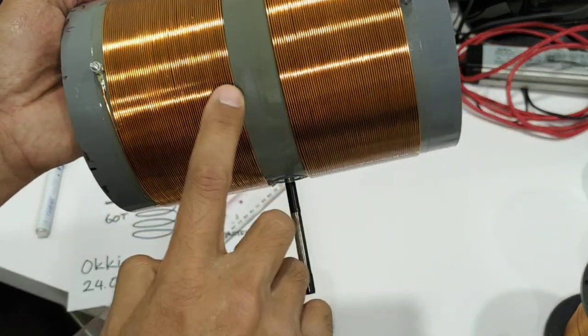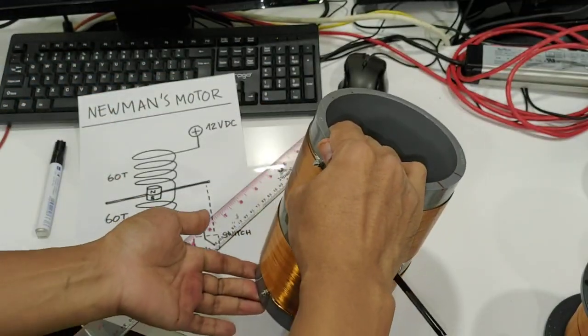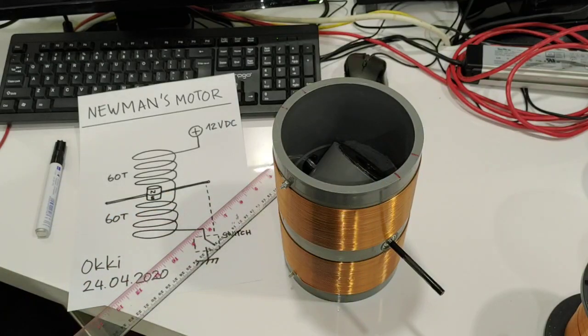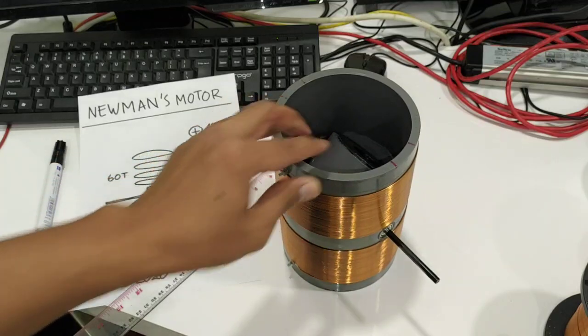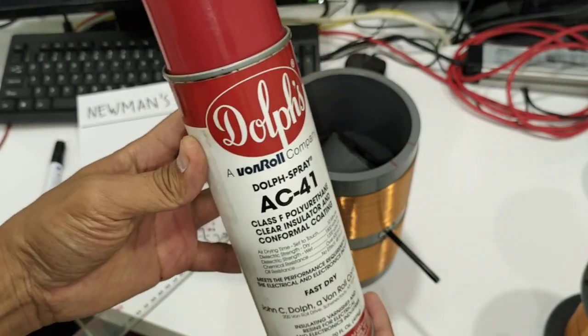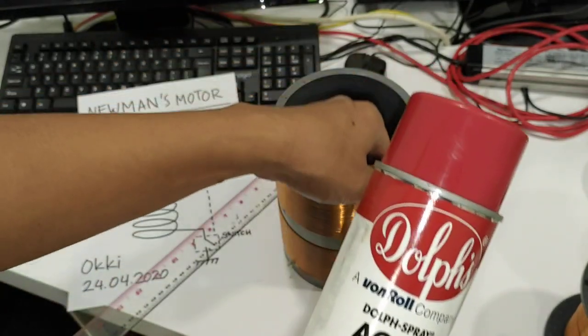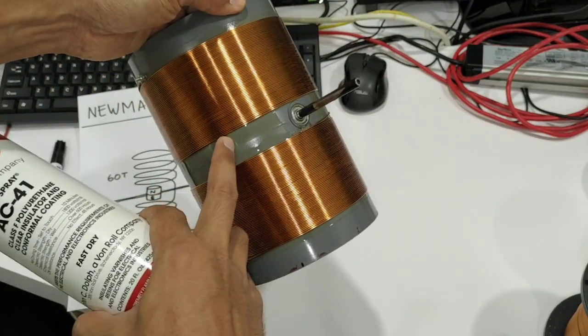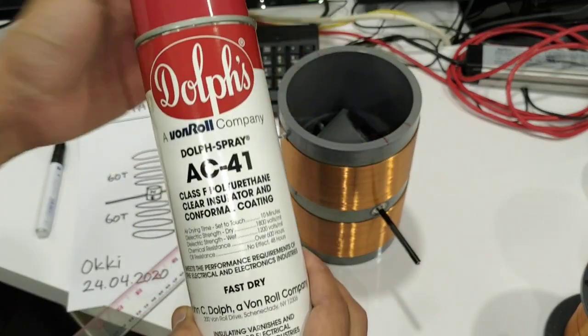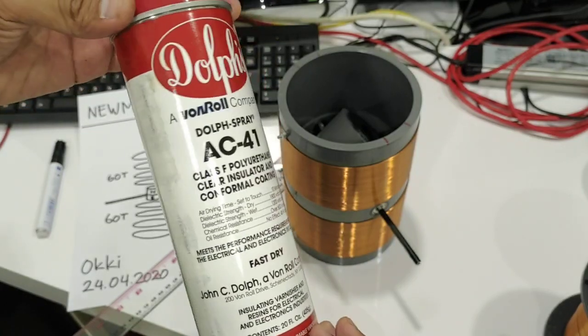I have here also some kind of coating. I think any Tesla coil builder knows why we need this coating. I will show you the spray that I use. This is the spray that I use for this coating.